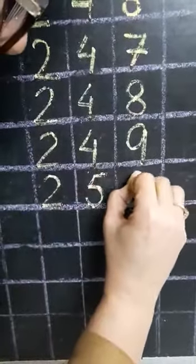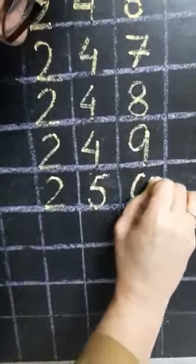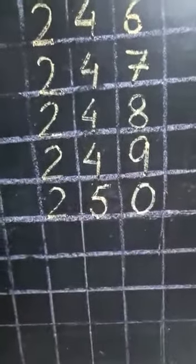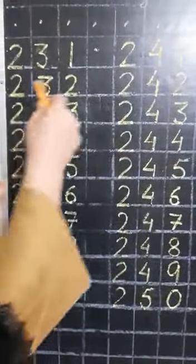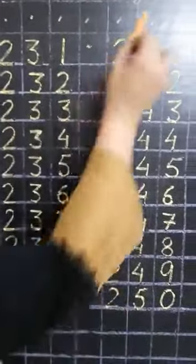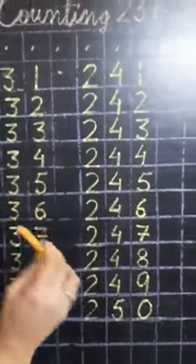Yes. 50 kaise hota hai? 5, 0. 50. Then we have completed our counting, 231 to 250.